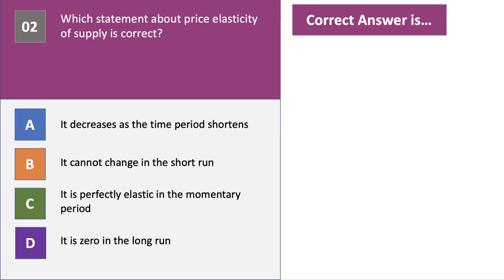Which statement is right? Four statements about elasticity of supply. The correct answer is A. Elasticity of supply reduces as the time period shortens — if we give producers less time to respond to an increase in demand, for example in farming there could be a minimum growing period. Elasticity can change in the short run, depending on the level of stocks. Elasticity tends to be perfectly inelastic in the momentary period but very elastic in the long run.